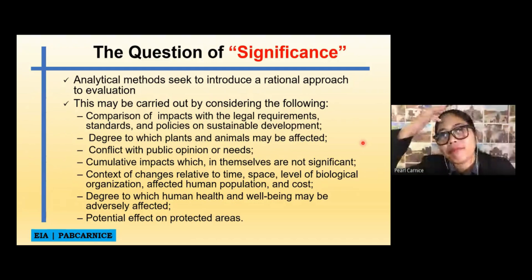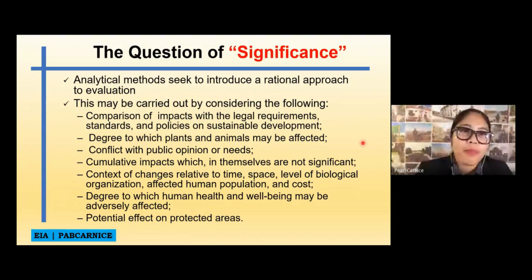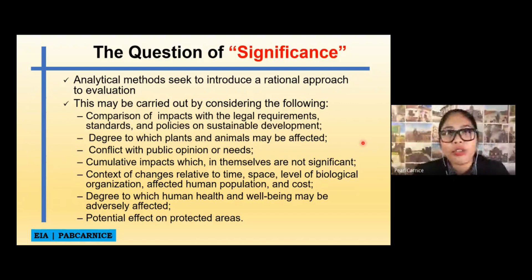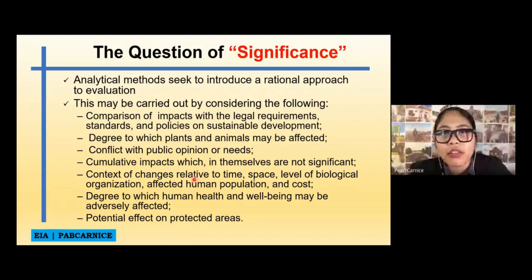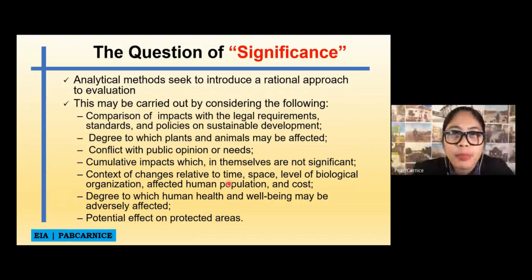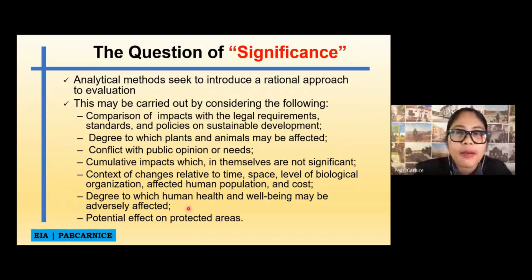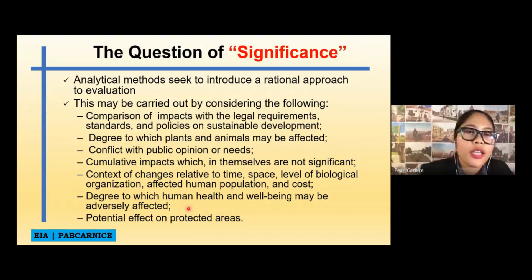Anyway, the degree to which plants and animals may be affected, and then conflict with public opinion or needs — they have to consider that. Also, cumulative impacts, which in themselves are not significant. Under the analytical methods, they also have to consider the context of changes related to time, space, level of biological organization, affected human population and cost, degree to which human health and well-being may be adversely affected, and the potential effect on protected areas.